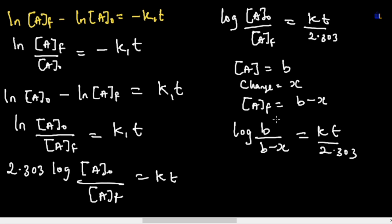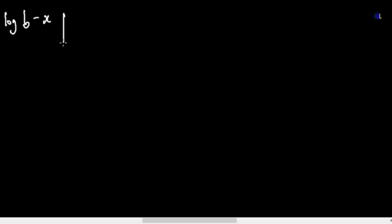The next thing before leaving first order is to show the graphical relationship between the remaining concentration and time. If you have a graph of log(b - x) versus time and are asked for the slope of this graph, the kinetic integrated expression for first order gives us: log(b / (b - x)) = kt / 2.303, where b is the initial concentration and b - x is the final remaining concentration.